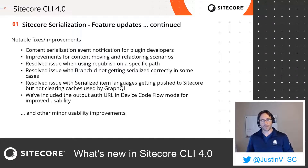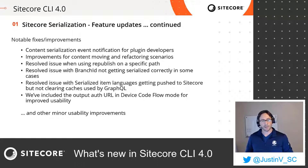Additionally, there are a few notable improvements that I want to share. Content serialization event notification is now available for plugin development. We've made improvements for content moving and refactoring scenarios. We've resolved an issue when using the republish option on a specific path. We've resolved an issue with branch ID not getting serialized correctly in some use cases. We've resolved an issue with serialized item languages getting pushed to Sitecore but not clearing caches used by GraphQL. And finally, we've included the output auth URL in device code flow mode for improved usability.